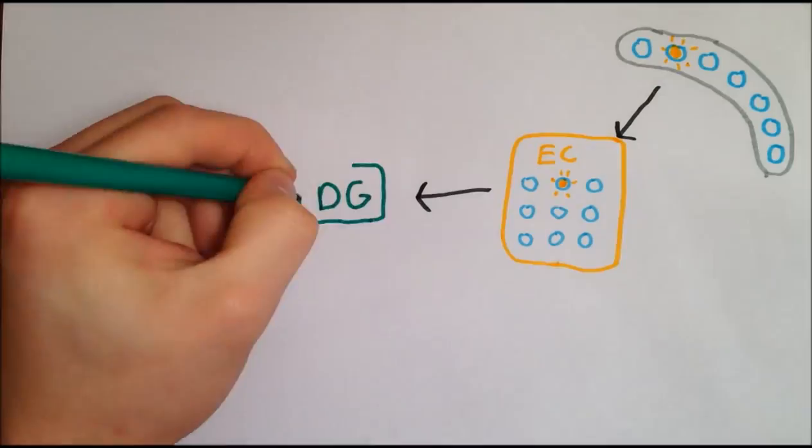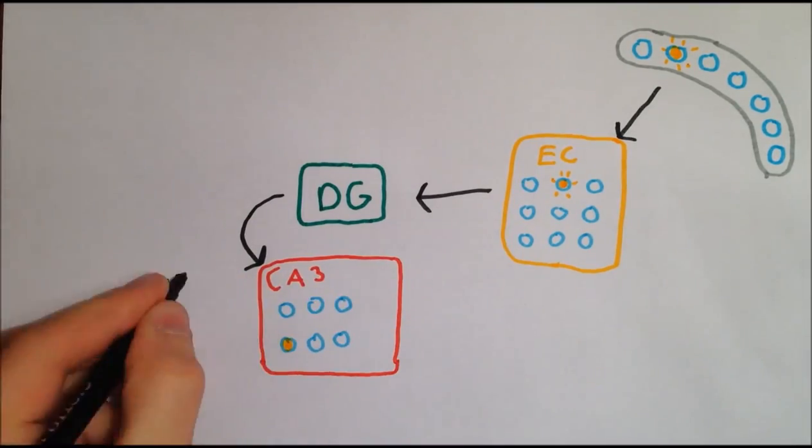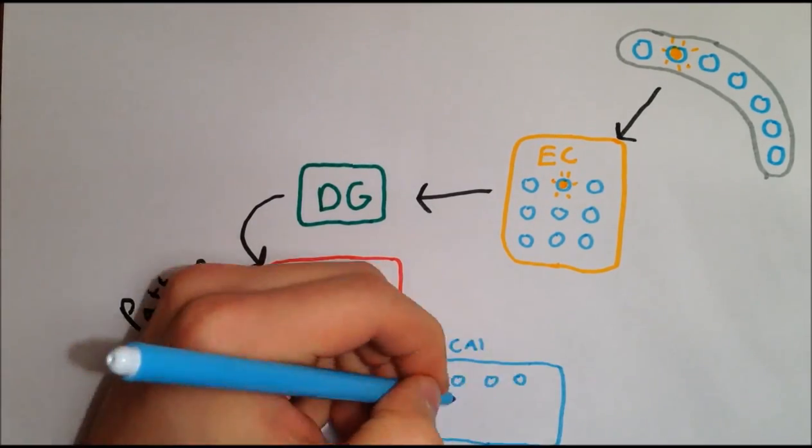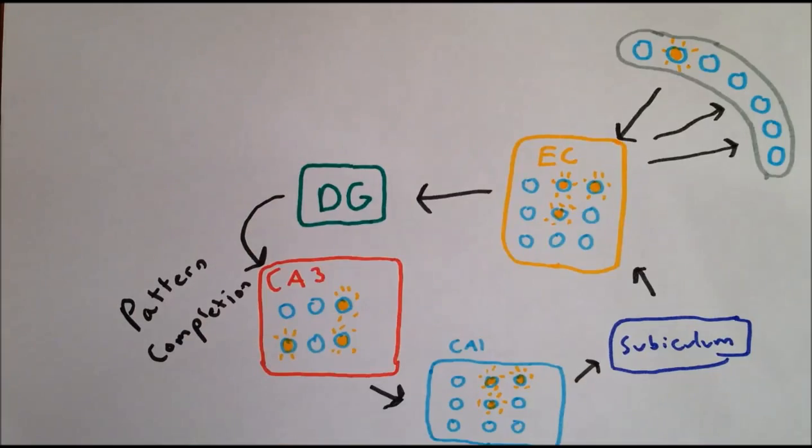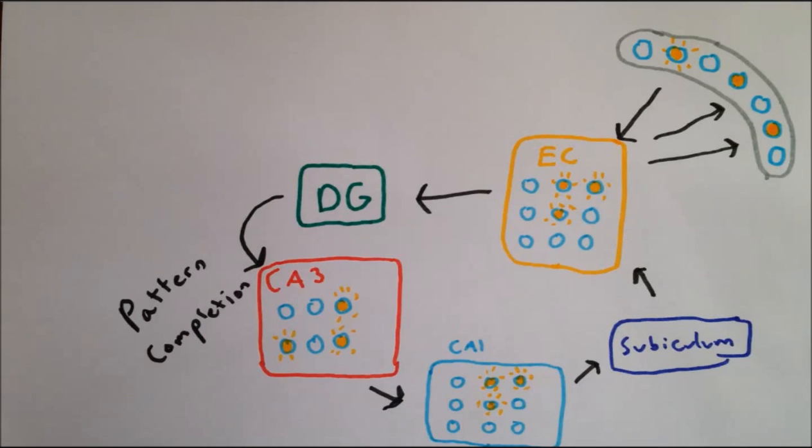This means that neurons from CA3 activate the neurons in CA1 corresponding to the correct cortical areas. These then project back to the entorhinal cortex, which has reciprocal connections to many areas of the cortex, reactivating the same combination of cortical areas as the input, and causing us to re-experience the event as a memory.